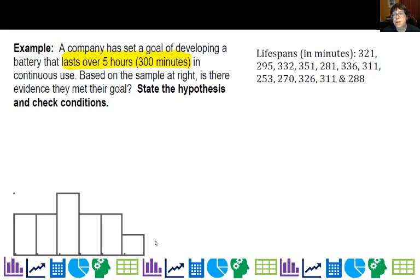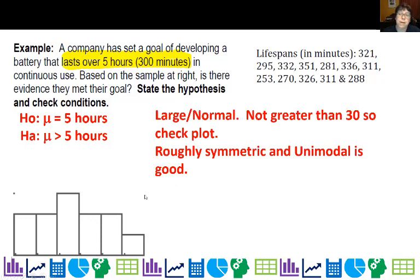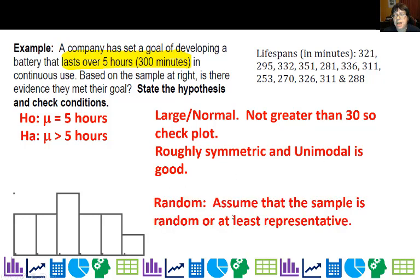So we want to know if it lasts over five hours, so the null would be it's just five hours. All right. The alternate is that it's more than five hours. Now here, I actually do have a histogram I already made of these lifespans, and I wouldn't have to do that if I had a sample size greater than or equal to 30, but I don't. So I have to plot it, and it's roughly symmetric and unimodal, so we're fine. And random: we don't know, it doesn't say random, so we're going to have to assume that the sample's random or at least representative.